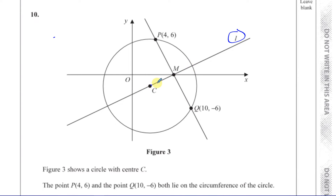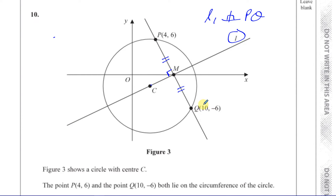Because line L passes through the midpoint of PQ and also the centre of the circle, it acts like a radius, and PQ is a chord of the circle. When a chord is cut into two equal halves by the radius, they always intersect at right angles. So if M is the midpoint of PQ and the line passes through the centre, then L is perpendicular to PQ — they meet at a right angle.